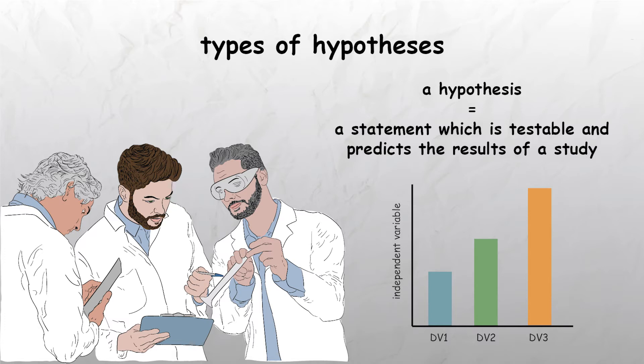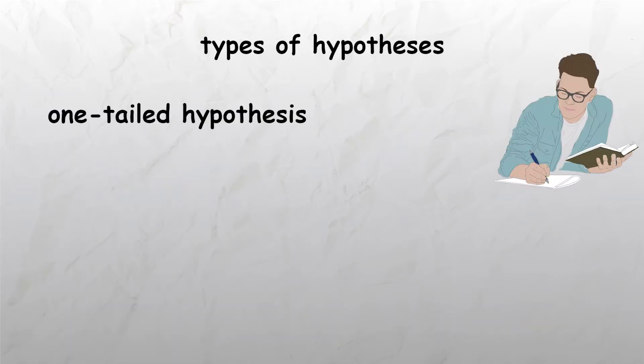There are a few main different types of hypotheses. One-tailed hypotheses, also known as directional hypotheses, predict the direction in which the results are expected to occur. For example, revision will improve exam performance.